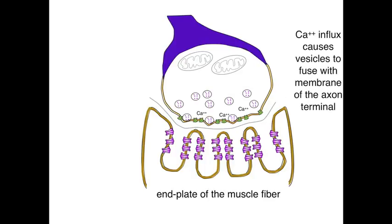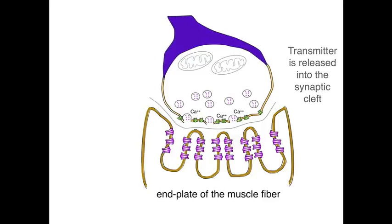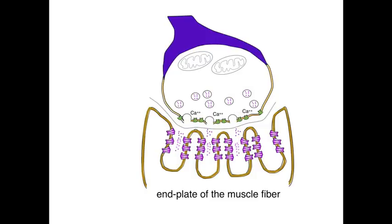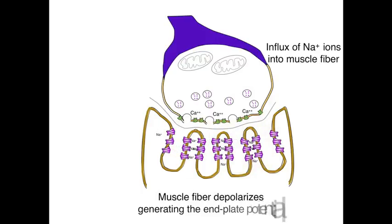The calcium influx causes vesicles to fuse with the membrane of the axon terminal, and the transmitter is released into the synaptic cleft. The acetylcholine then binds and opens the acetylcholine receptors on the muscle fiber. The influx of sodium ions into the muscle fiber, due to the opening of acetylcholine receptors, then generates the end plate potential — that is, the depolarization of the muscle fiber itself.